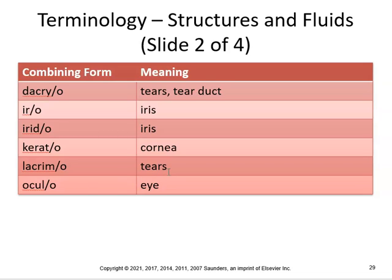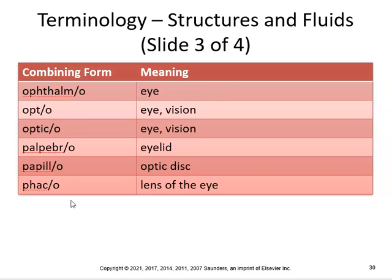Lacrimal means pertaining to tears. Lacrimation is the process of forming tears. Ocul means eye, so intraocular means pertaining to within the eye. Ophthalm means eye — ophthalmologist is one who specializes in the study of the eye. Opt means eye or vision — ophthalmic means pertaining to the eye. Ophthalmoplegia is paralysis of the eye muscles.